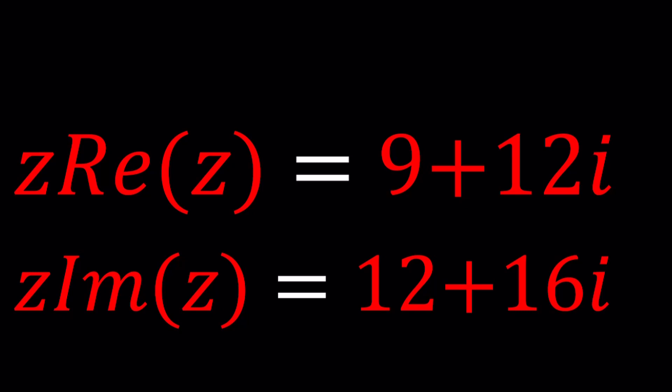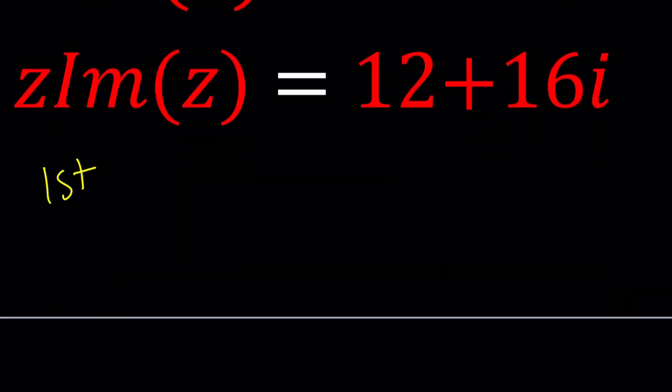So let's get started. First method, I'm going to just use the standard form because that's pretty typical. So let's replace Z with A plus BI. So from here,